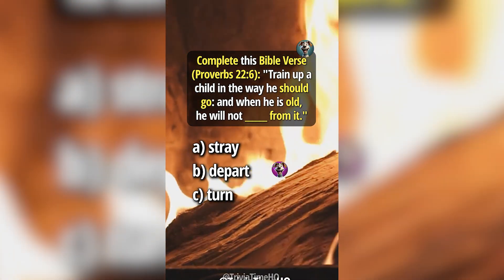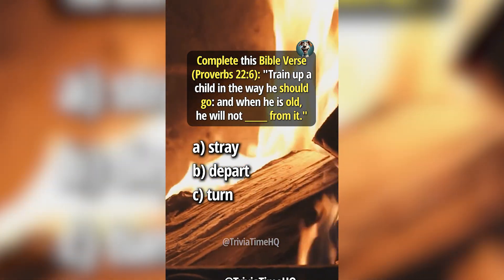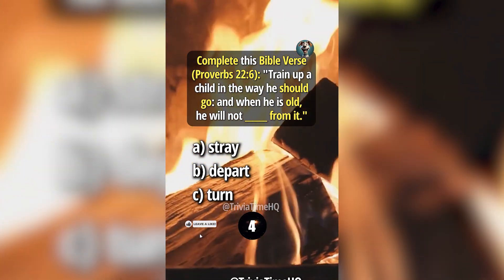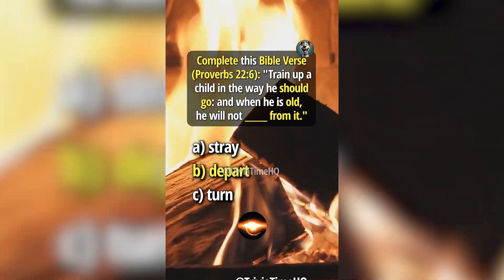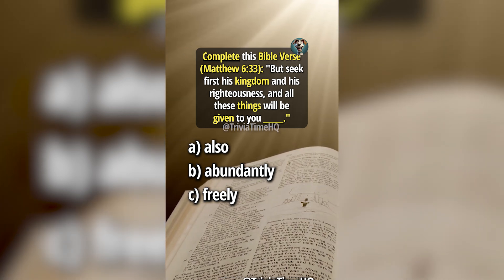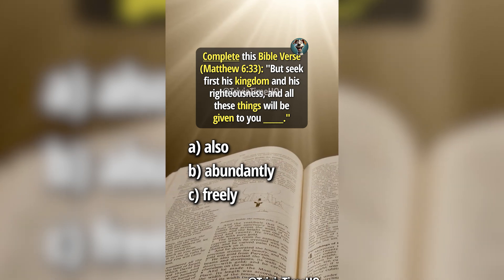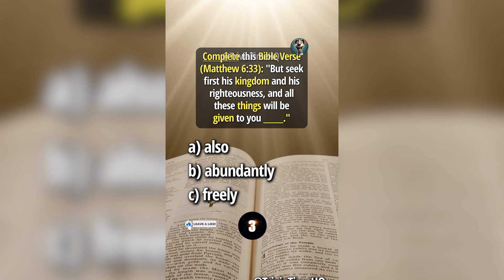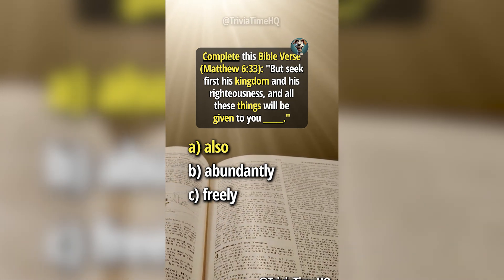Complete this Bible verse, Proverbs 22:6: 'Train up a child in the way he should go, and when he is old, he will not blank from it.' Answer B, depart. Complete this Bible verse, Matthew 6:33: 'But seek first his kingdom and his righteousness, and all these things will be given to you blank.' Answer A, also.